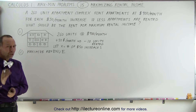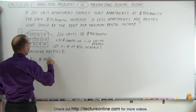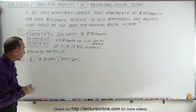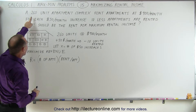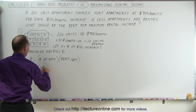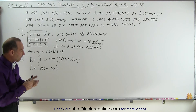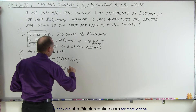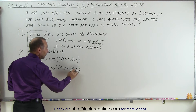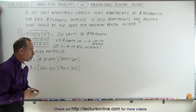Step three: we need an equation for revenue. Revenue equals the number of apartments rented multiplied by the rent per apartment. The number of apartments is 260 minus 10x (since each increase reduces rentals by 10). The rent per apartment is 900 plus 50x. So revenue R = (260 − 10x)(900 + 50x).